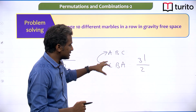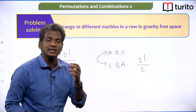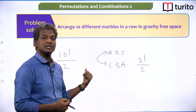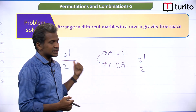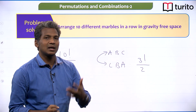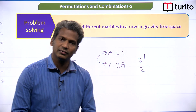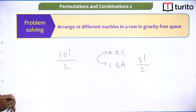So when we arrange 10 marbles in gravity-free space, the answer is 10 factorial divided by 2, because every arrangement is actually counted twice. This is just another example of symmetry — we are dividing by the symmetry factor.